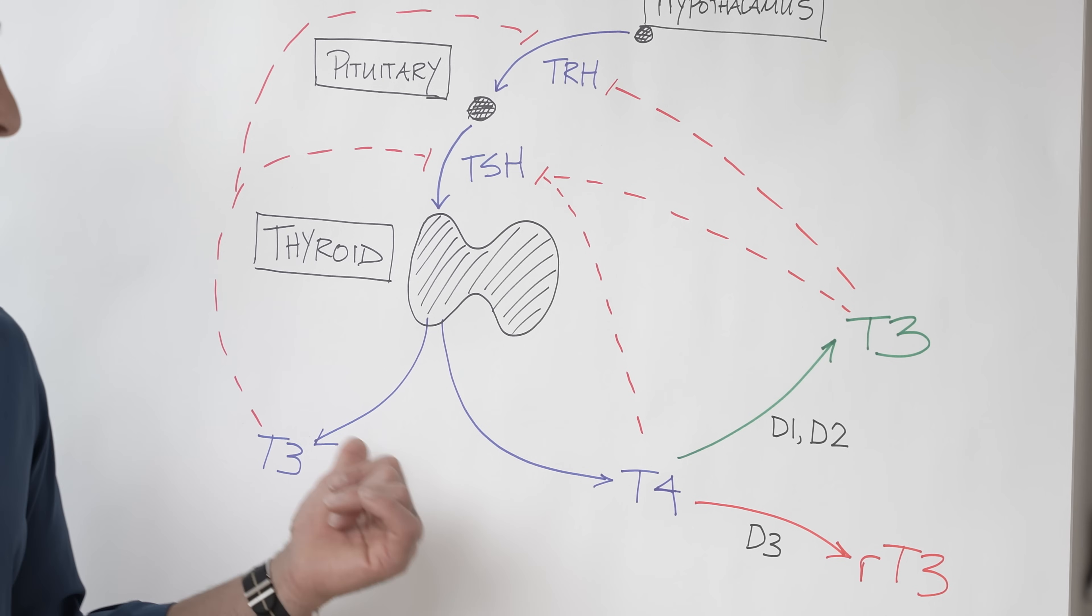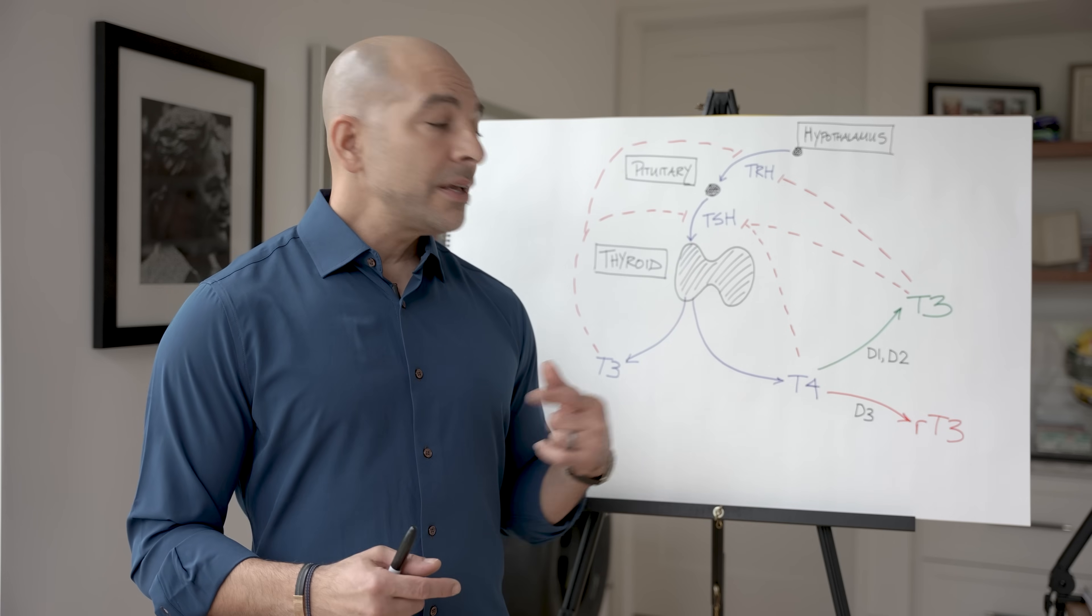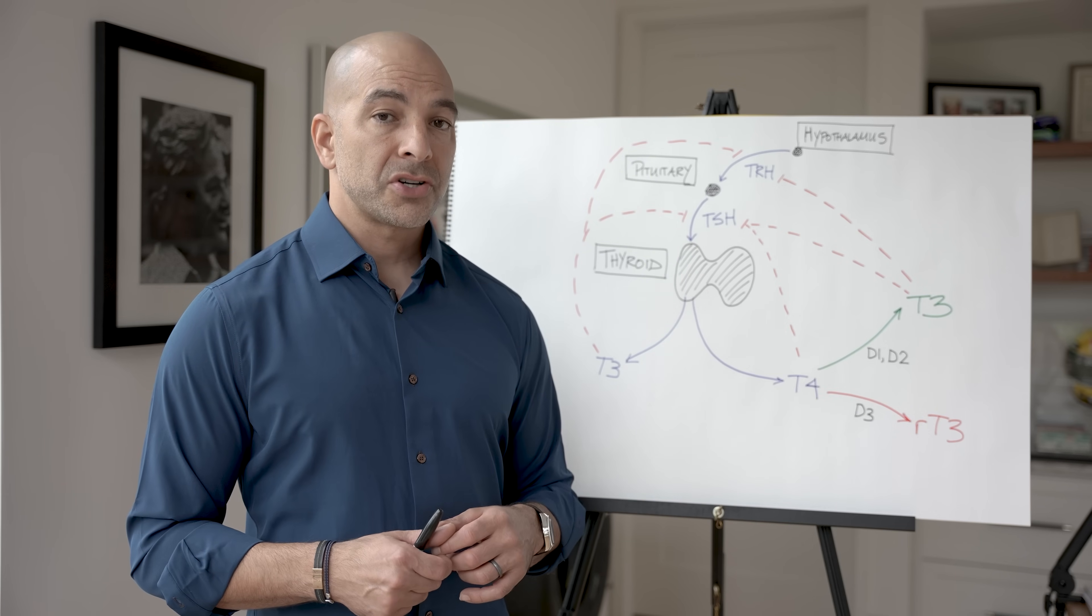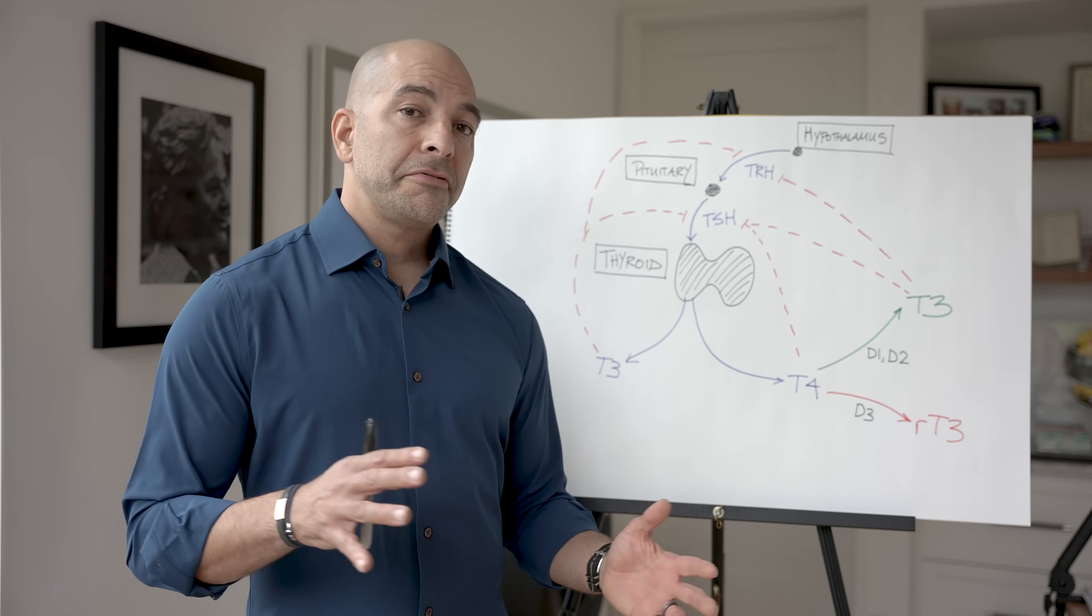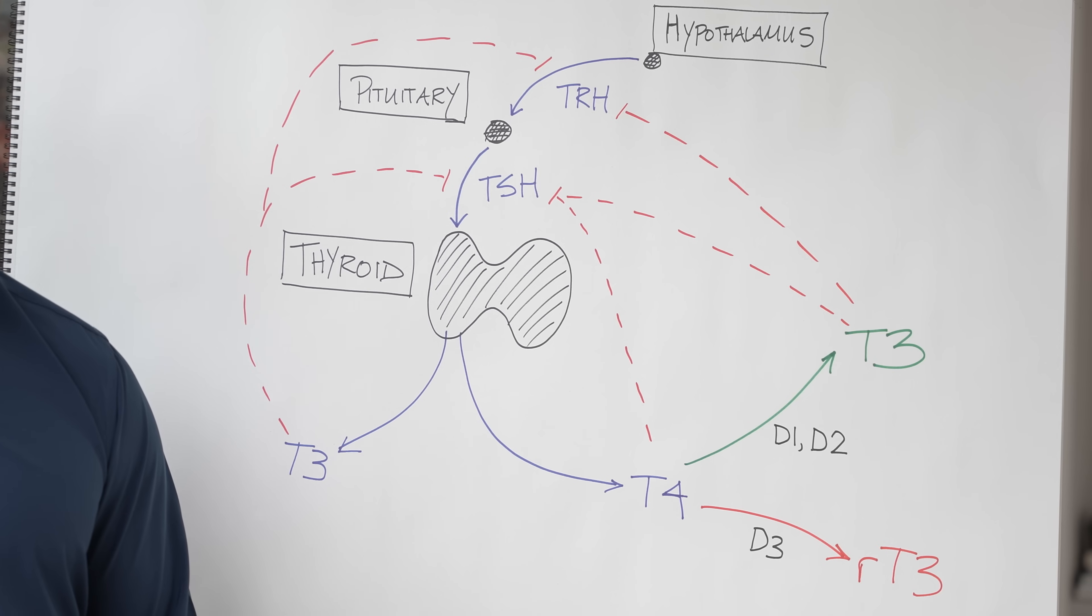I would say about half of that was due to the reduction in T3, and the majority of that was due to the increase in reverse T3. So the body is going to regulate these three enzymes in response to various physiologic circumstances. And that's effectively, at the cellular level, how the body is controlling thyroid function.